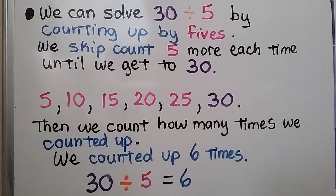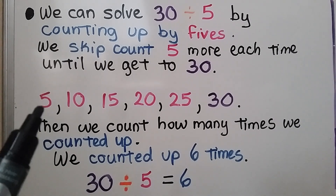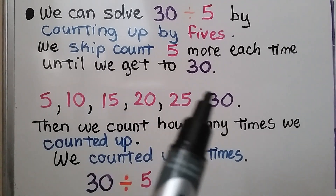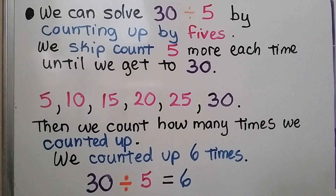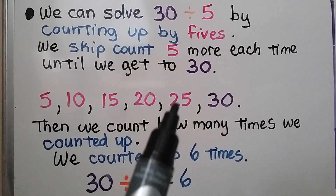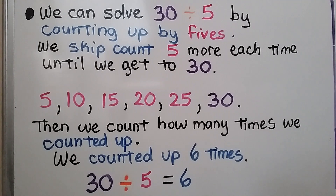We can solve 30 divided by 5 by counting up by fives. We skip count five more each time until we get to 30: 5, 10, 15, 20, 25, 30. Then we count how many times we counted up: 1, 2, 3, 4, 5, 6. We counted up 6 times, so 30 divided by 5 is equal to 6.